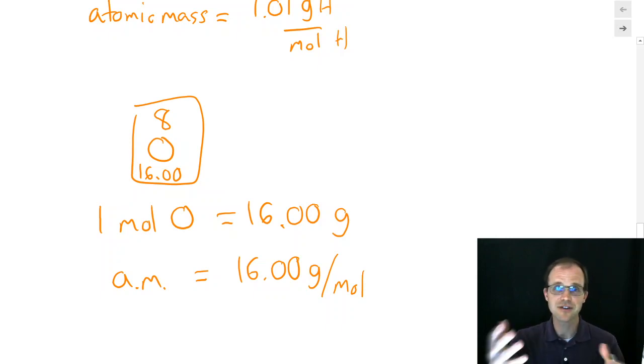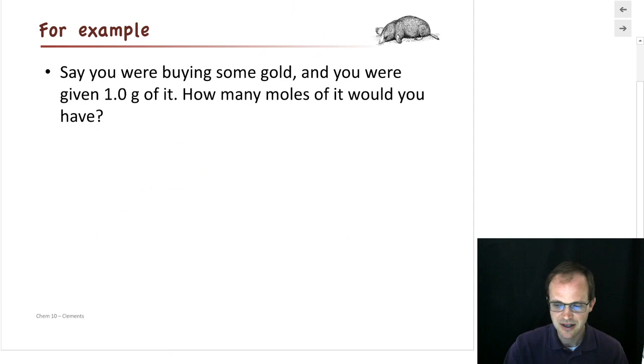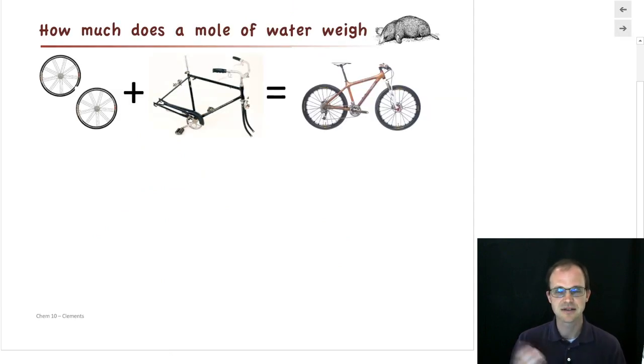So how often do we do chemistry with single atoms? Well, not really often. We do chemistry with molecules. We react sodium bicarbonate with vinegar in order to get other reactions and make those volcano reactions that you do. Both of those are molecules. They're combinations of atoms put together to make molecules. And how are we going to figure out masses of those? Well, it turns out that it's not that difficult to do, because if we want to know how much a bicycle weighs, we could go out and we could actually measure the mass of a bicycle.